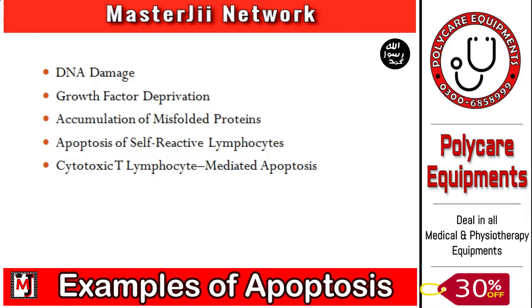In our body, apoptosis occurs in normal situations and sometimes in pathological situations. First, when there is no need for an organ or tissue, apoptosis occurs. Also, lymphocytes which do not get stimulation from antigens and cytokines, and cells that have relevant hormones — when a growth factor is absent, apoptosis occurs.